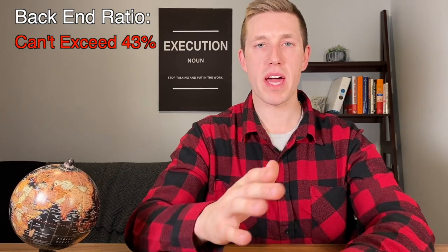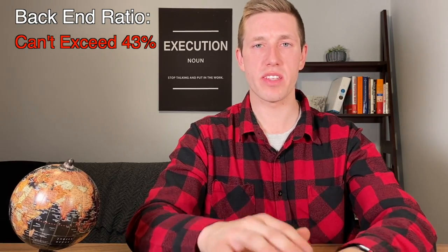For the back end debt to income ratio, this shouldn't exceed 43%. All this matters when you're trying to qualify for a home loan, and debt to income ratio is a big portion of it. You should always know what your debt to income ratio is. So let's look at a scenario with a couple of different debts and how much you would need to earn to qualify for those debts.